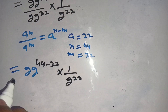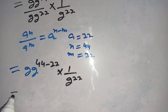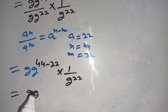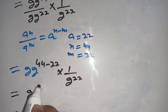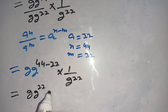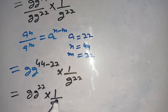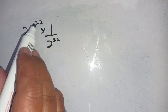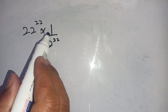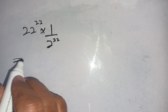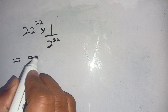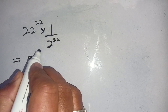Our next step becomes 22 power 22, times 1 divided by 2 power 22.